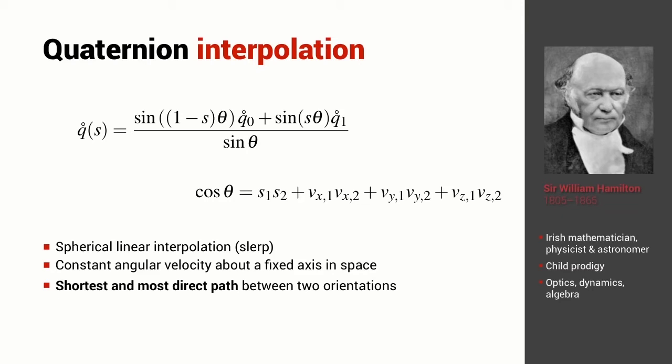This is referred to as spherical linear interpolation and it is the shortest and most direct path between any two orientations. And it corresponds to a constant angular velocity about a fixed axis in space.